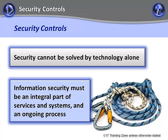The next area we are going to study in this lesson is the types of security controls. Security is not just a step in the life cycle; it cannot be delivered by technology alone. Information security must be an integral part of all services and systems. It needs to be viewed as an ongoing process that is continuously managed using a set of security controls.